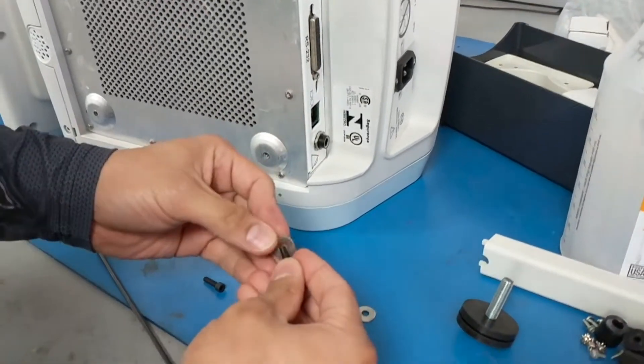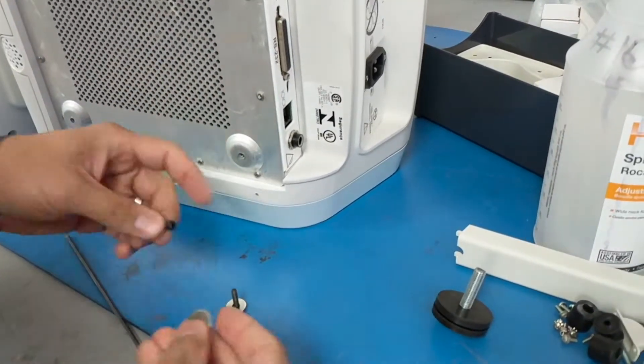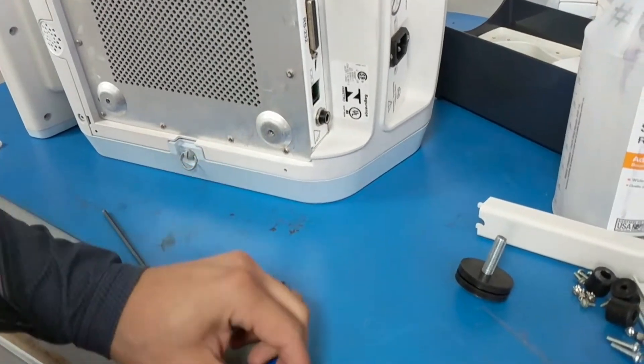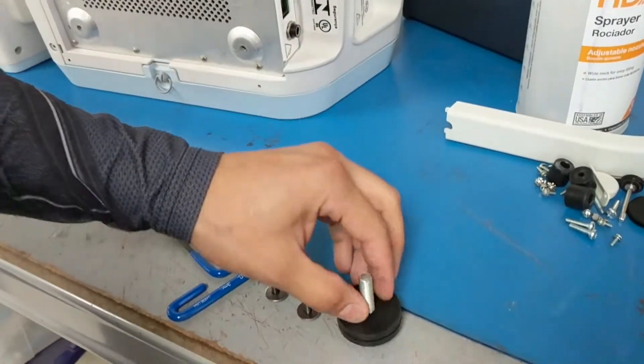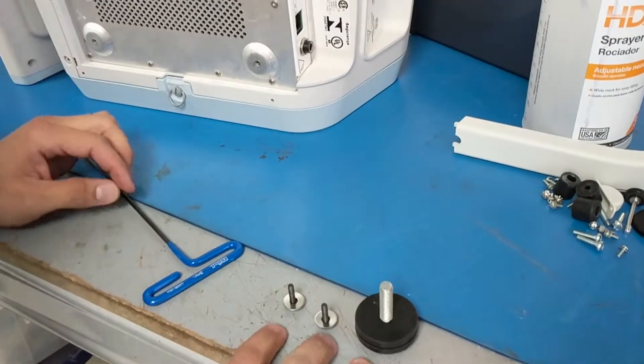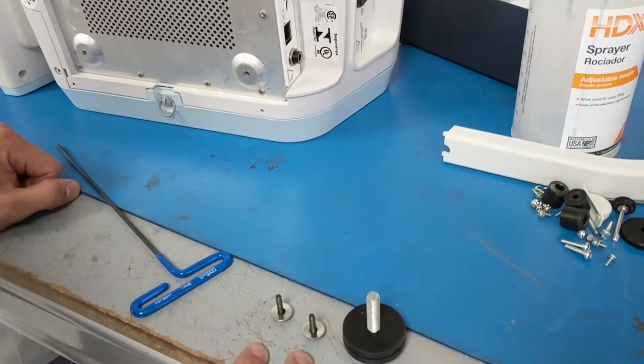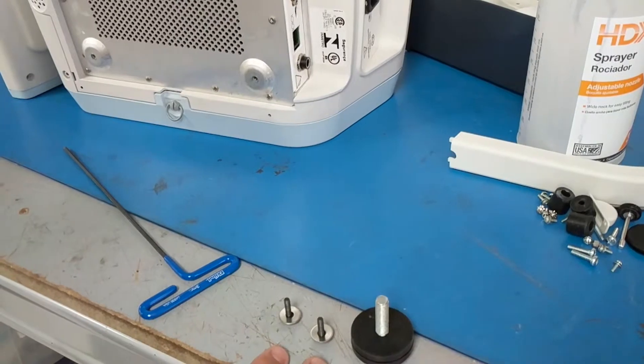Now we're going to put these two, one washer per screw, and we're going to get those ready. We're going to set aside the four feet and we're going to have our larger screw. So we have three screws that we are going to use to mount the V60 onto the cart.